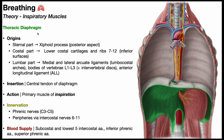The diaphragm is divided into two halves: a right half and a left half. Each half is called a hemidiaphragm. On the patient's left is the left hemidiaphragm; on the patient's right is the right hemidiaphragm. Each hemidiaphragm is innervated by its own phrenic nerve — a left phrenic nerve and a right phrenic nerve.